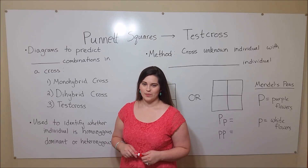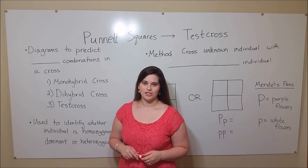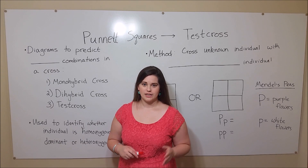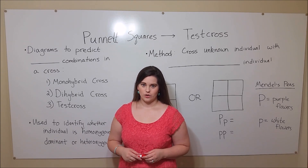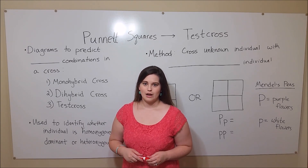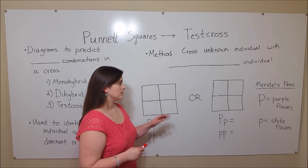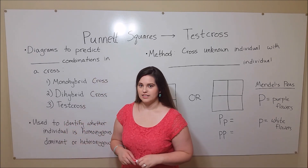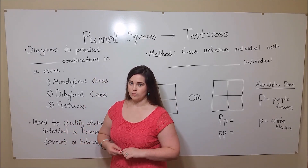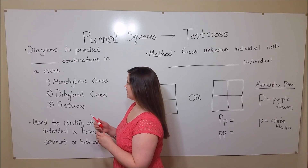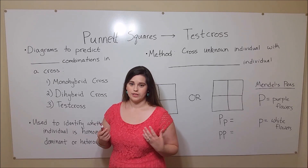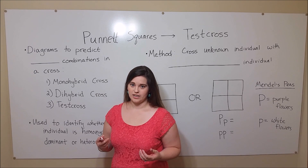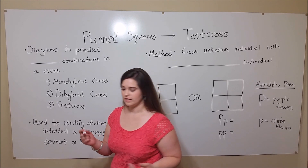Hi everyone, and welcome to Biology Professor. Today we're talking about how to use Punnett squares in a test cross. Remember that Punnett squares are simply diagrams that help us to predict the outcome — the different possible gamete combinations that come in fertilization.